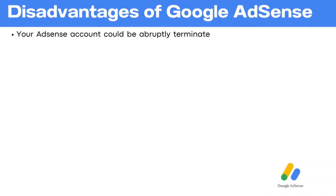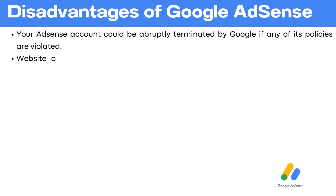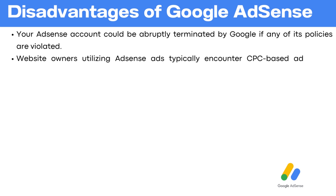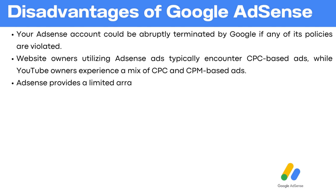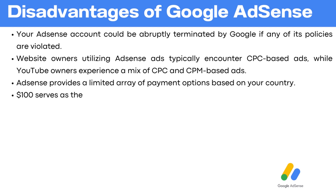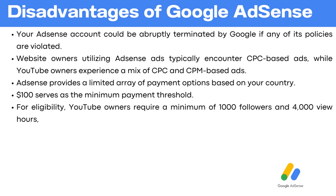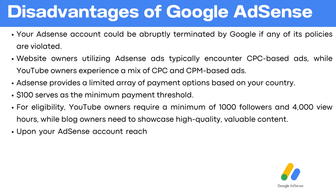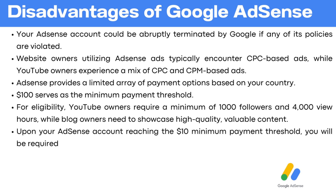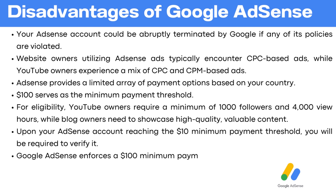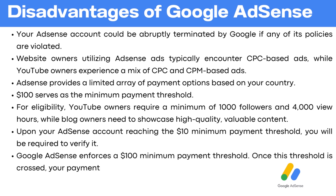Disadvantages of Google AdSense: your AdSense account could be abruptly terminated by Google if any of its policies are violated. Website owners utilizing AdSense ads typically encounter CPC-based ads, while YouTube owners experience a mix of CPC and CPM-based ads. AdSense provides a limited array of payment options based on your country. $100 serves as the minimum payment threshold. For eligibility, YouTube owners require a minimum of 1,000 followers and 4,000 view hours, while blog owners need to showcase high-quality, valuable content. Upon your AdSense account reaching the $10 minimum payment threshold, you will be required to verify it. Google AdSense enforces a $100 minimum payment threshold. Once this threshold is crossed, your payment will be issued within 30 days.